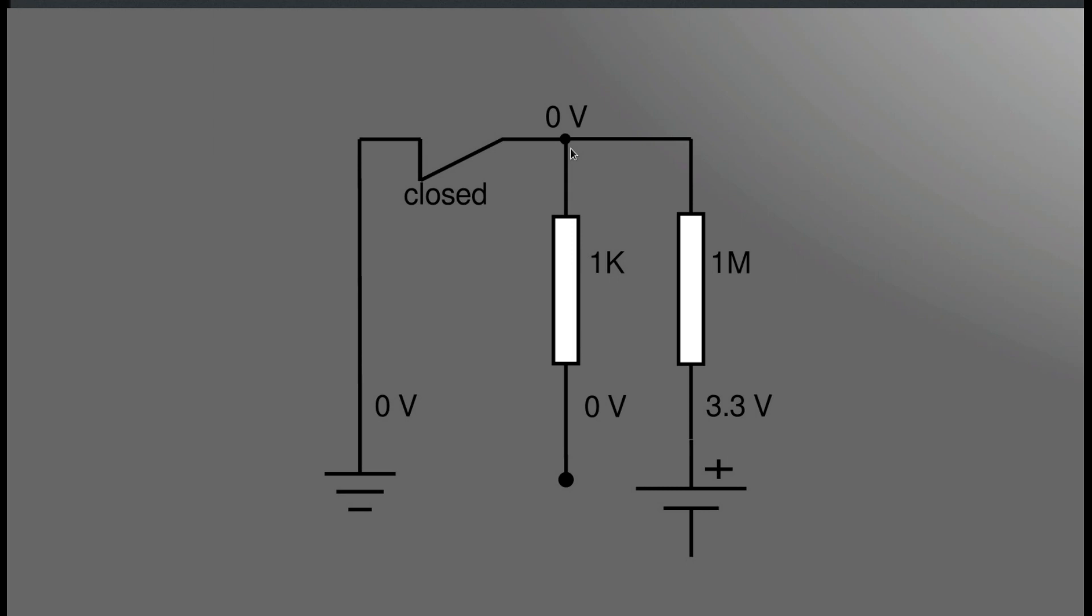So we have a potential of 0 volts at this point, so there is no way to have a potential here. Here we also have zero volts and every current is flowing through this mega ohm resistor, which means there is nearly no current flowing through it.